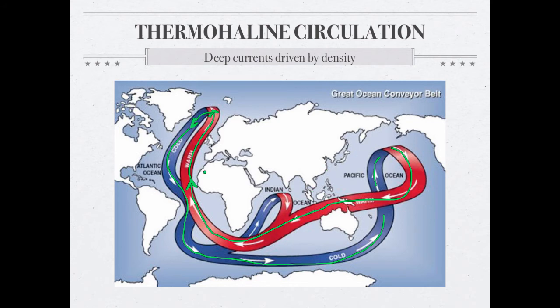Scientists who talk about global warming worry about this ocean circulation pattern shutting down as the ocean gets warmer, because one of the things that drives it is cold water sinking down and becoming salty. If the Earth is getting warmer, glaciers are going to melt, fresh water will run into the ocean making it less salty, which means it won't sink, which means this ocean current may shut down — which would probably have some pretty profound consequences.